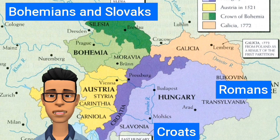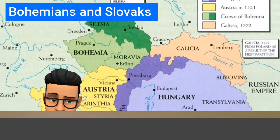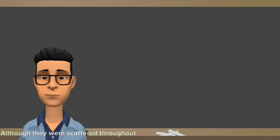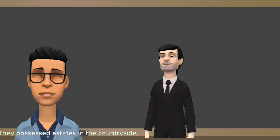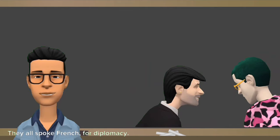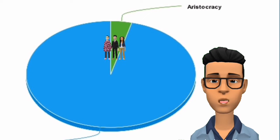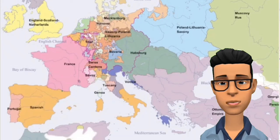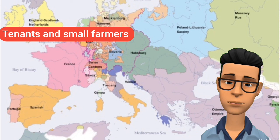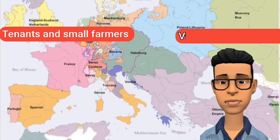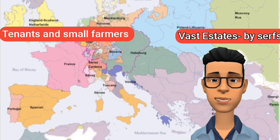Let us see how nationalism emerged in Europe. The aristocracy was the dominant class in Europe, socially and politically. Although they were scattered throughout the continent, they were united by a common way of life. They possessed estates in the countryside and houses in towns. They all spoke French for diplomacy and were connected to different aristocracies through marriage ties. This powerful aristocracy was a small part of the population. The majority in Europe was peasantry. In the west, land was mostly farmed by tenants and small farmers, whereas in eastern and central Europe, landholding was characterized by vast estates cultivated by serfs — peasants who worked for big landlords.